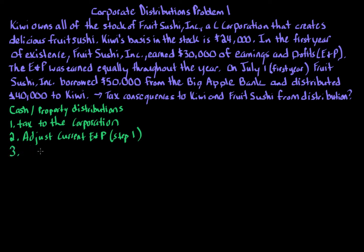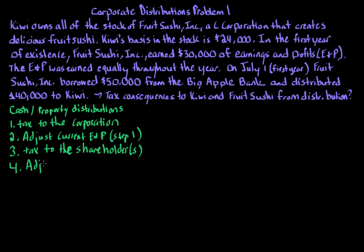Step three — and this is where the meat of the analysis usually is — covers the tax consequences to the shareholder or shareholders. Steps one and two are done with respect to the corporation; step three is done individually for each shareholder. Step four, the last step, is to adjust the accumulated E&P. The accumulated E&P at the end of the year rolls over to become the beginning accumulated E&P for next year, so it's very important to calculate correctly.